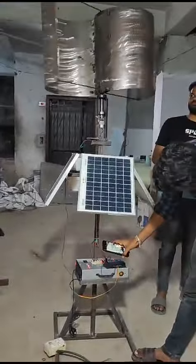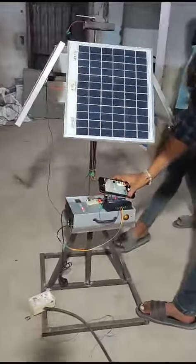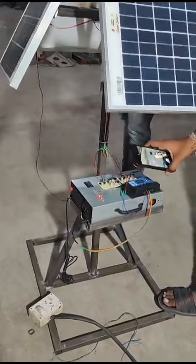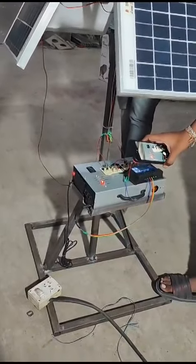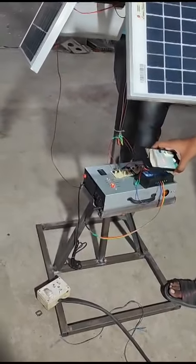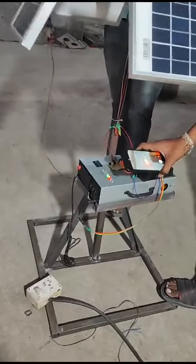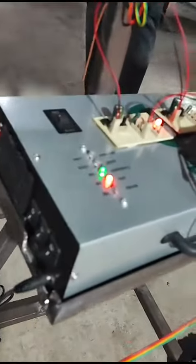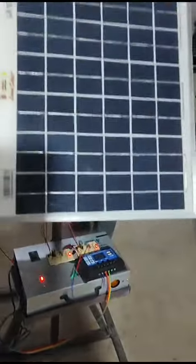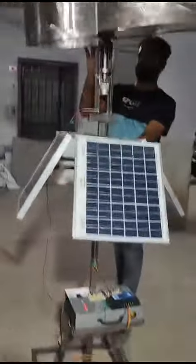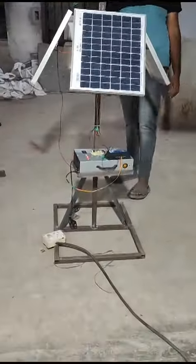When the wind turbine rotates, the LED intensity increases. Here you can see the charging LED also being indicated. This is how the solar and wind power generation is demonstrated.